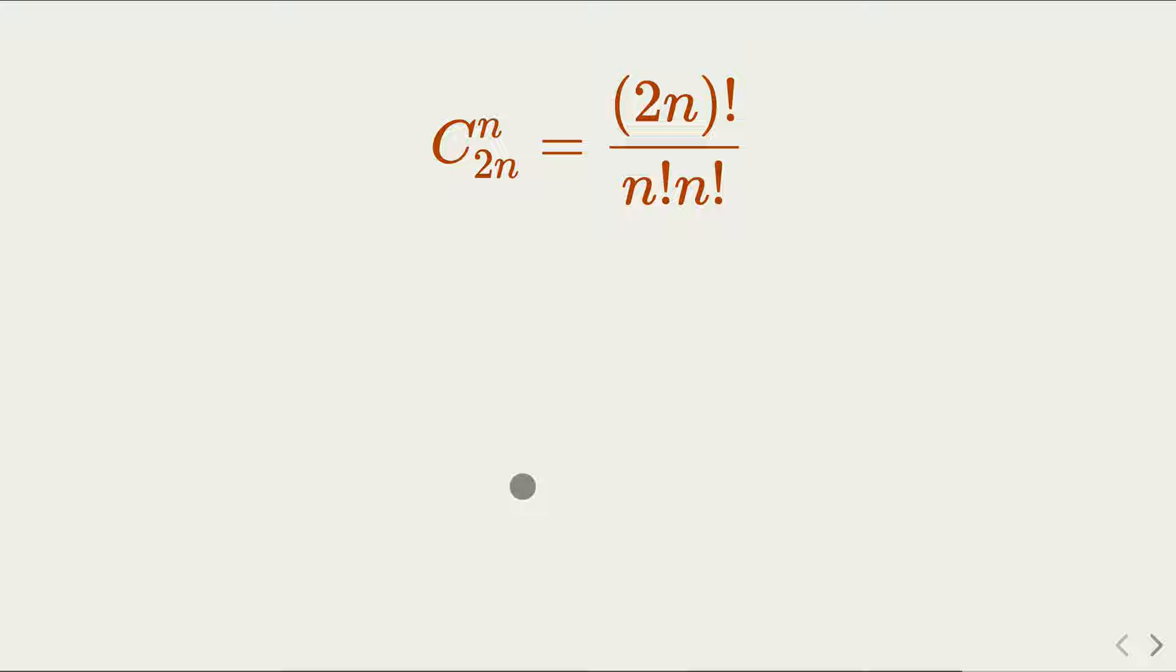Alright, so here's a recap. The formula for 2n choose n is a fraction of 2n factorial divided by n factorial times n factorial. Of course, when we learn this fact, we take it for granted that it is an integer, but today we want to prove it.